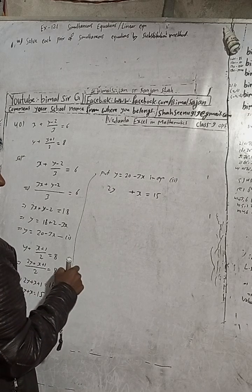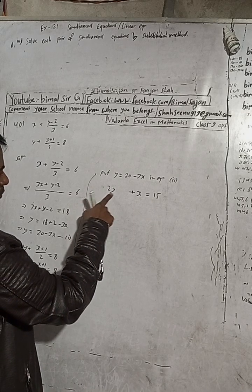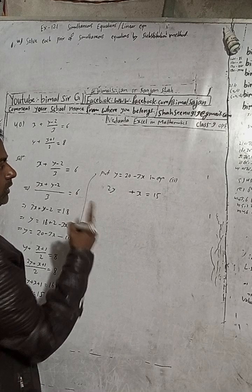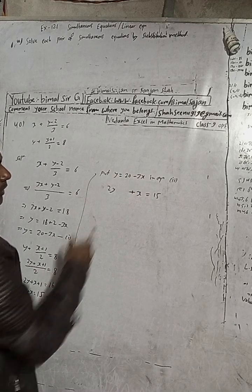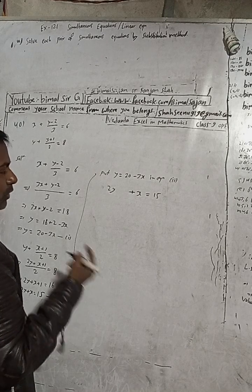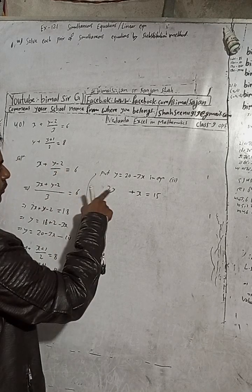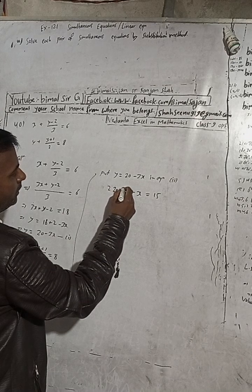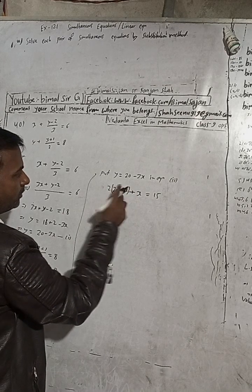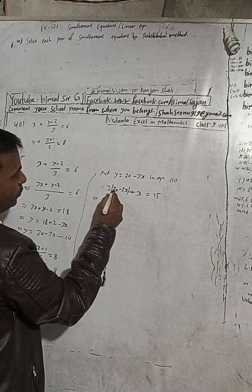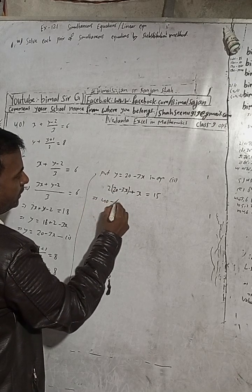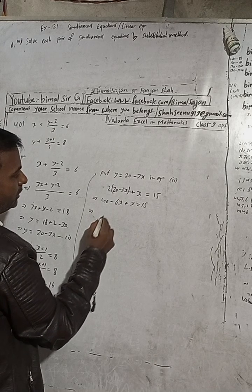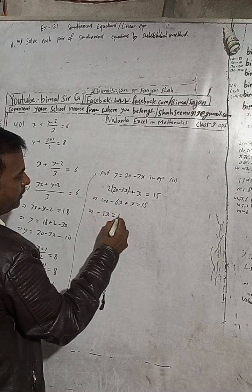In equation 2, which is 2y plus x equals 15, substitute y with 20 minus 3x. In place of y, put 20 minus 3x — bracket is important here. Expanding: 2 times 20 minus 3x gives 40 minus 6x, plus x equals 15. So 40 minus 6x plus x gives minus 5x equals 15.